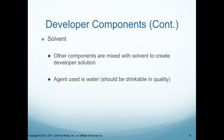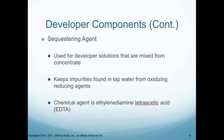Continuing with developer components, we have the solvent. Other components are mixed with the solvent to create a developer solution. The agent used is water, and it should be drinkable in quality — not just any regular tap water. A sequestering agent is used for developer solutions mixed from concentrate. Sequestering agents keep impurities found in tap water from oxidizing the reducing agents in the film. The chemical agent is ethylene diaminetetraacetic acid — let's just call it EDTA.